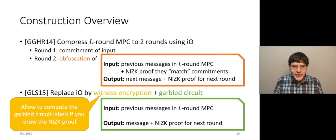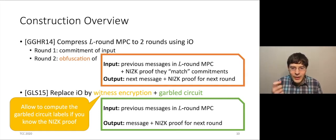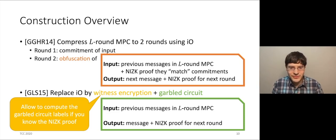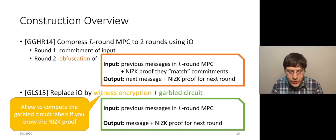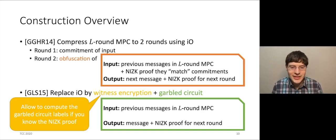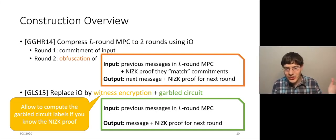IO is a very expensive primitive. So in 2015, Gordon, Liu, and Shi showed that you can replace IO by garbled circuits plus a seemingly weaker primitive, witness encryption. Instead of obfuscating this orange box, we are garbling a slightly simpler green box — actually the same as the orange box, except without the verification of the NIZK proof. To evaluate a garbled circuit, what you need is the labels or keys corresponding to the wires of the inputs. In GLS-15, they witness-encrypt these labels so that people can decrypt the label they need using the NIZK proof, proving that the messages they got before are valid.